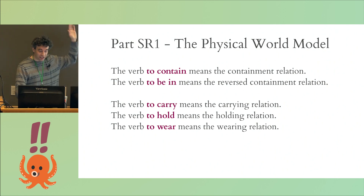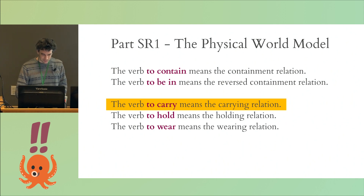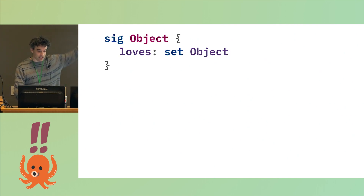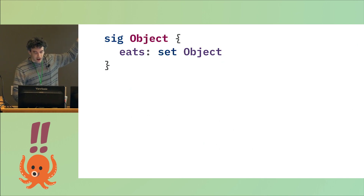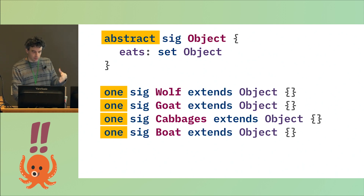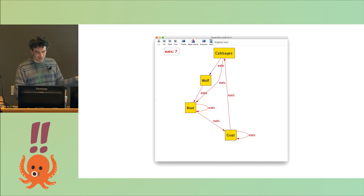The standard rules of Inform begin with a long list of relations that underpin the simulation. The sentence defining 'the verb to carry' is the reason I can write 'the player is carrying a sack of cabbages' and Inform understands. Anyway, we're not here to make friends — we're here to tell a story about four specific things: objects that want to eat each other. And here they are. If I ran this model right now it would create maybe three wolves, which I don't want, so we have to tell Alloy there's just one of each. Then Alloy generates food webs — it's basically a battle royale of cannibalism.